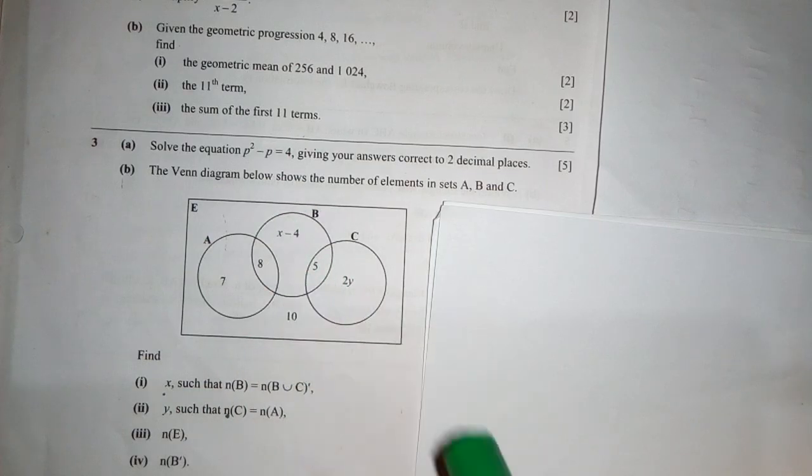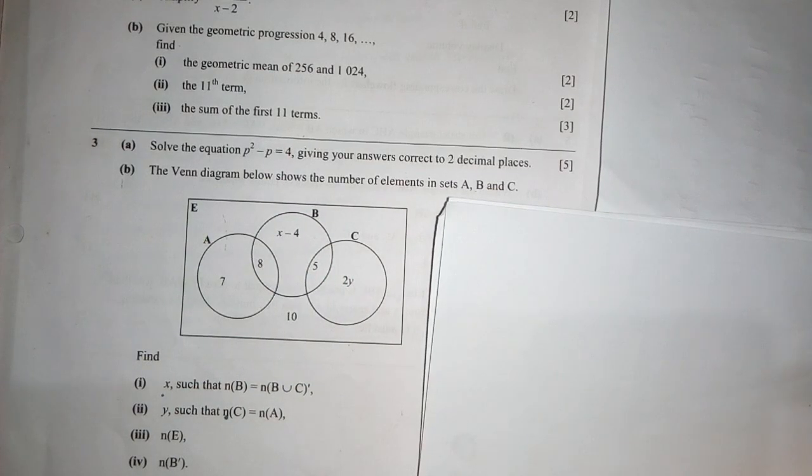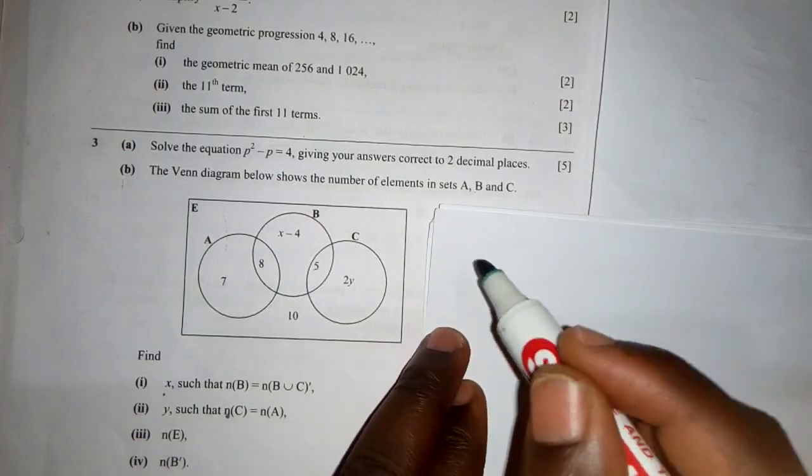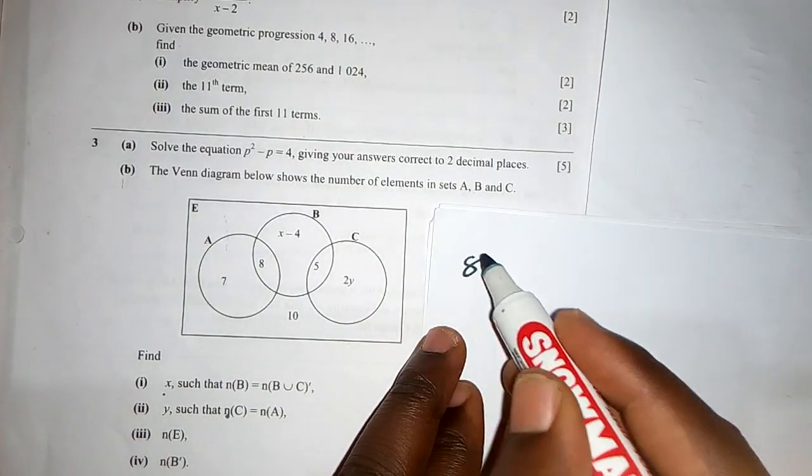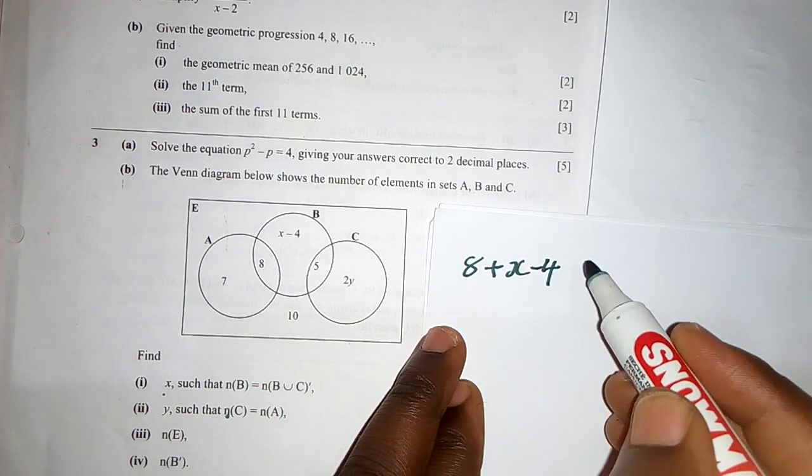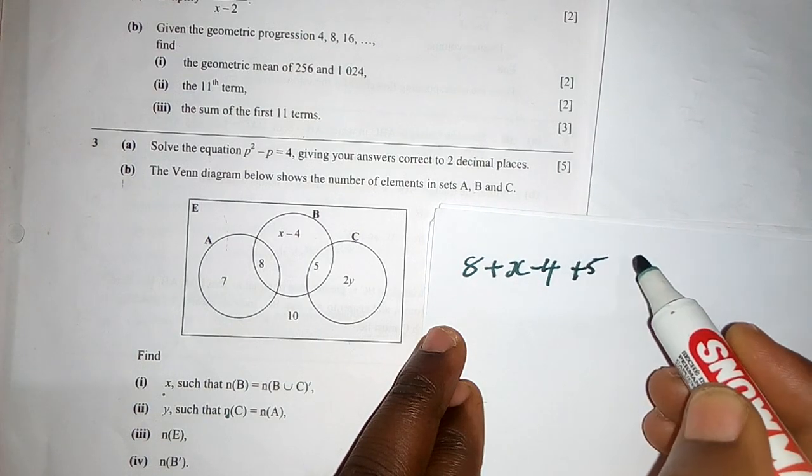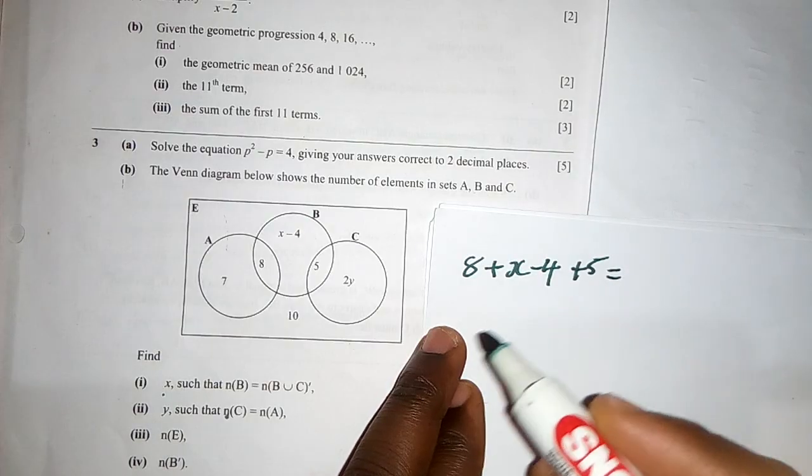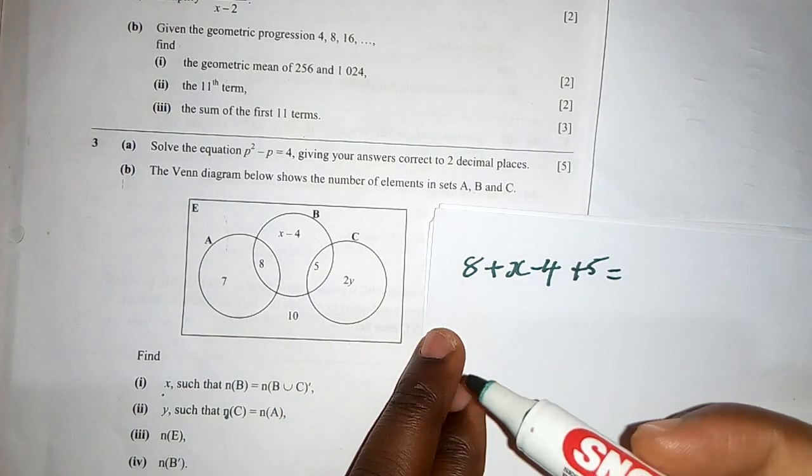So where is our B? Our B is over here. So we list or we add all the elements in B. So we say 8 plus x minus 4 plus 5, which is equal to the number of elements in B union C complement.